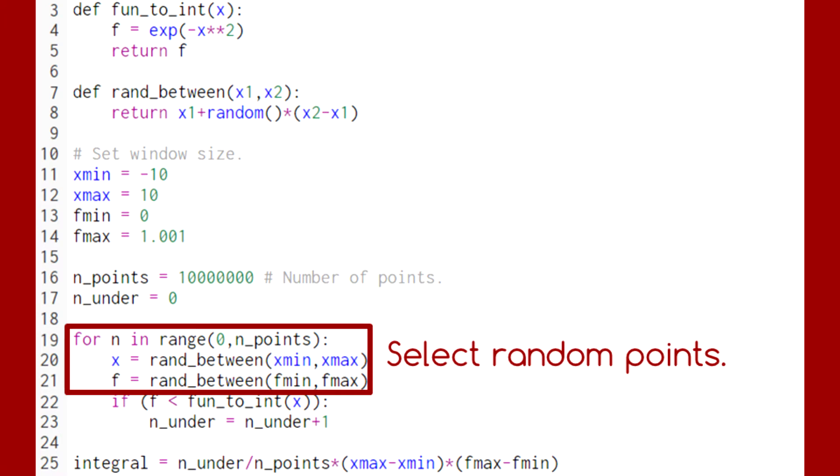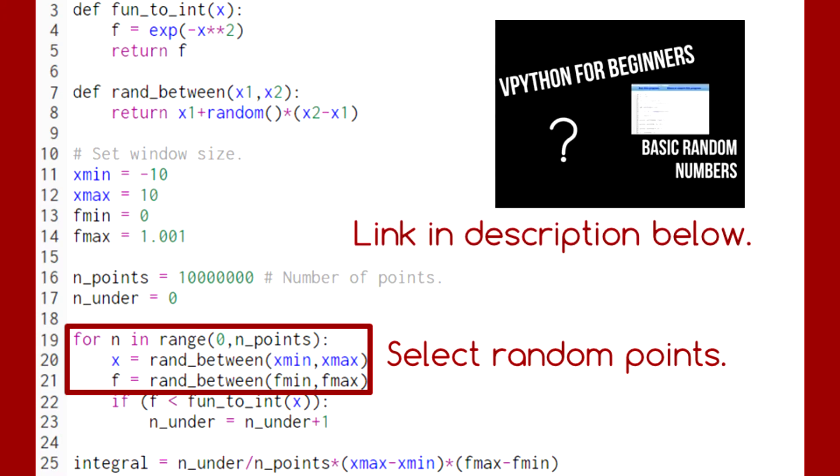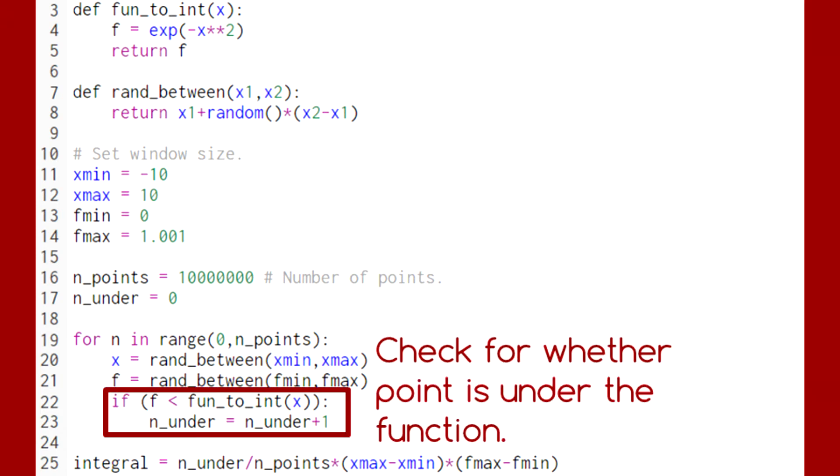Then, we set up a loop to select random points given by random values of x and f. For a review of how to generate random numbers, see the video linked in the description below. If the randomly selected f is less than the value of the function at the randomly selected x, then we increase the number of points found under the function by 1.